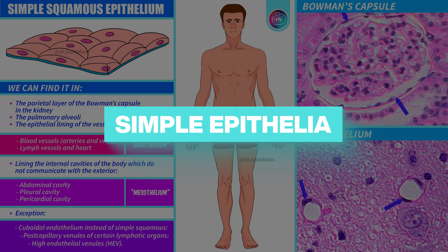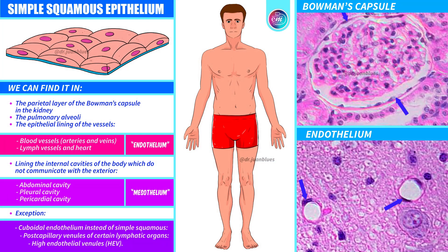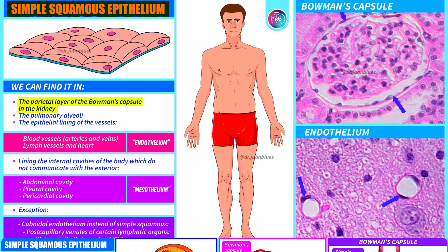Simple epithelia. Simple squamous epithelium. We can find it in the parietal layer of the Bowman's capsule in the kidney. I know that sounds really weird, but don't worry — I will explain it and you will see that it's not that difficult. The important thing is to visualise the structure.